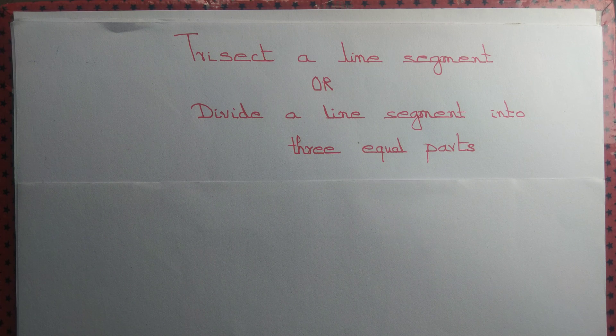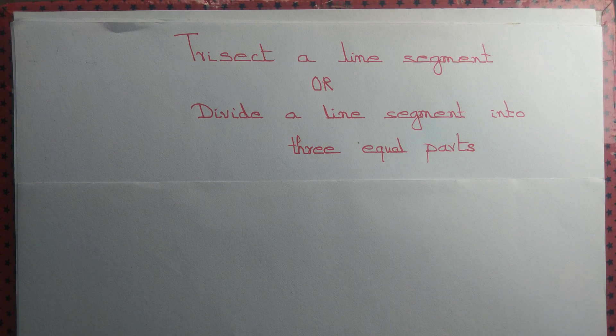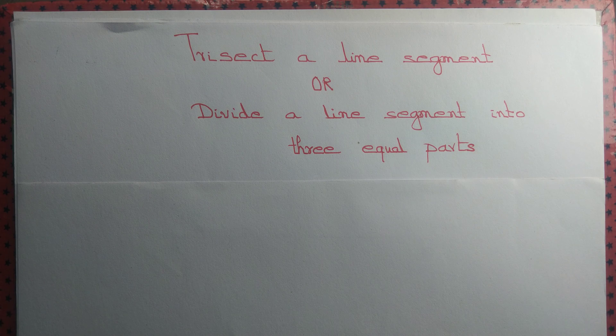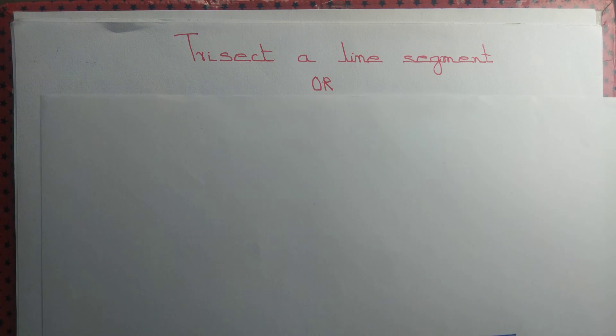Let us trisect our line segment. In other words, we want to divide a line segment into three equal parts. For that purpose, we take a line segment AB and we want to divide that line segment into three equal parts.